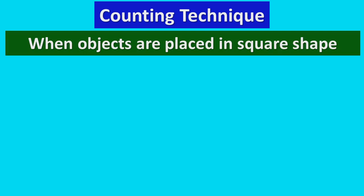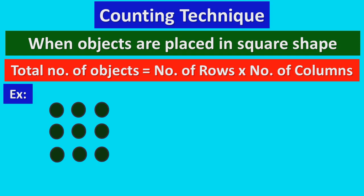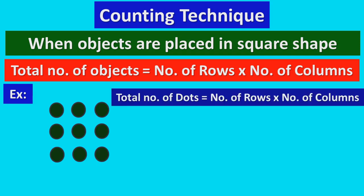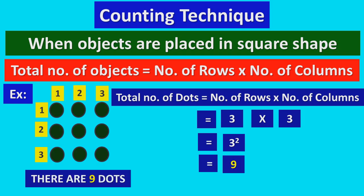So, check out how many squares. When objects are placed in a square shape, the total number of objects is equal to the number of rows multiplied by the number of columns. For example, consider the dots. Total number of dots equals number of rows into number of columns. Here, there are 3 rows and 3 columns. So, 3 into 3 is equal to 3 squared, which is 9. So, there are 9 dots.